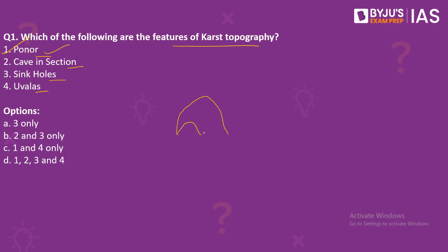Cave-in section is also a feature of karst topography. Sinkhole is one of the most common features of karst topography — it is a depression on limestone, and can be funnel-shaped, cylindrical pipe, or saucer-shaped. So Number 3 is also correct. Uvalas are closed karst depressions, bigger in size than sinkholes — a complex depression with several lesser depressions within its rim. So Number 4 is also a feature of karst topography. The right answer is option D: 1, 2, 3 and 4.